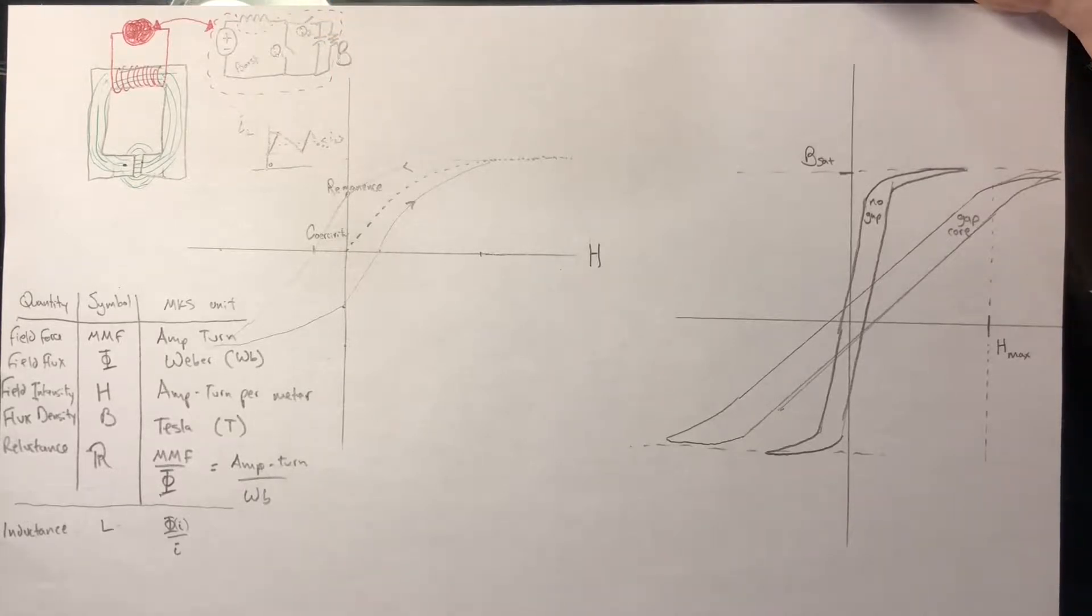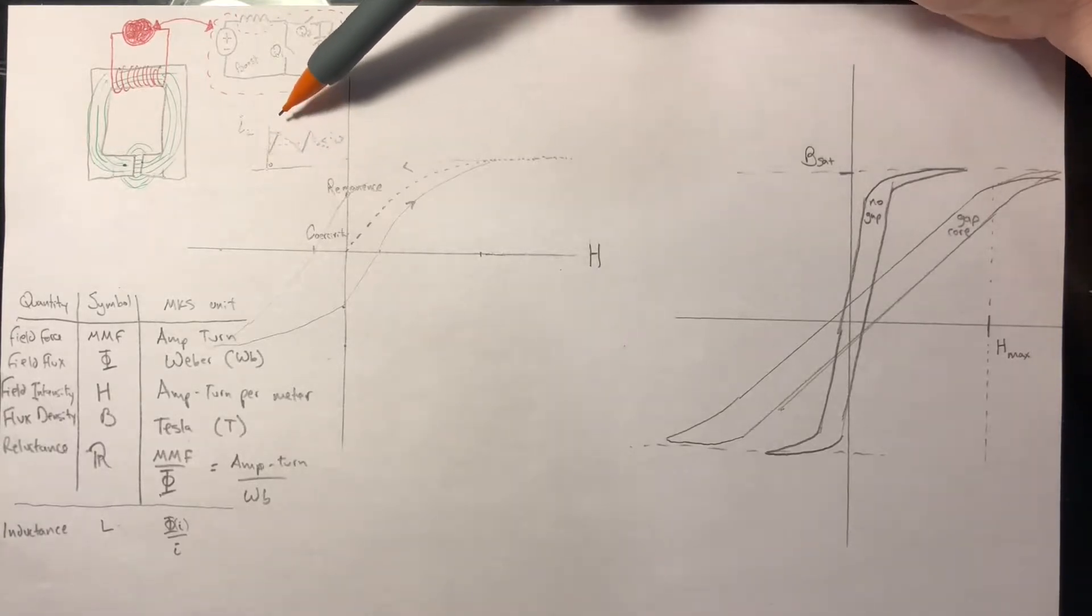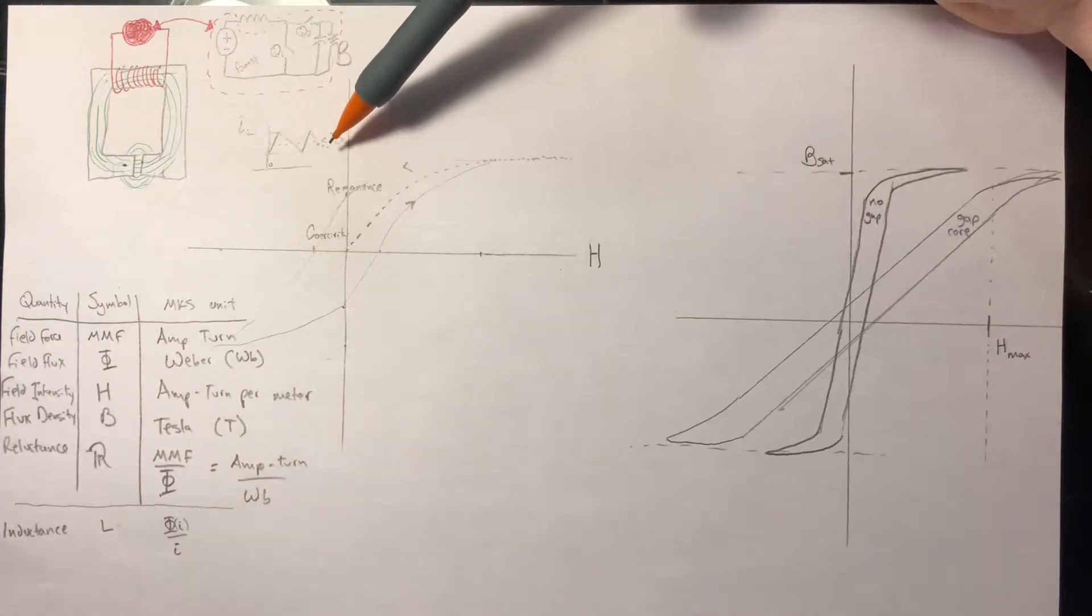We also know that along with the number of turns, IL plus delta IL determines the amount of energy stored. So here's the inductor current here, the average along this point, and then it spikes up and down according to what we allow.